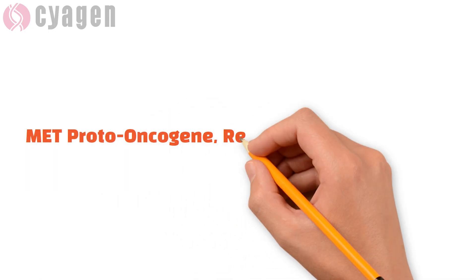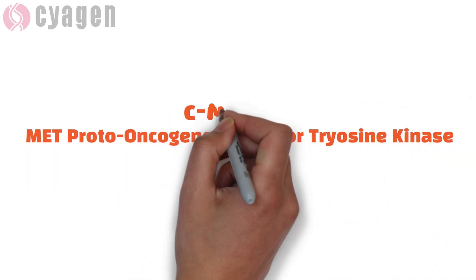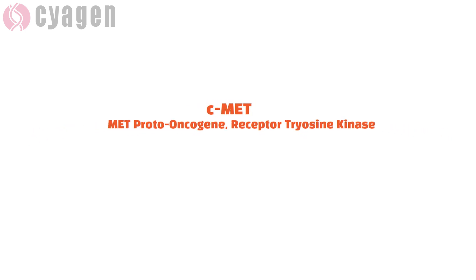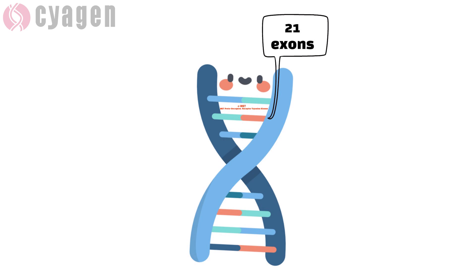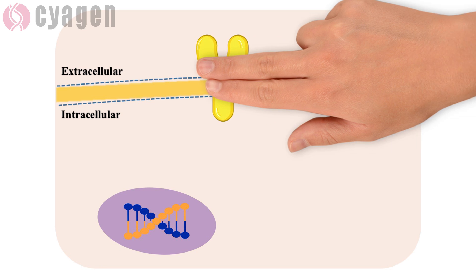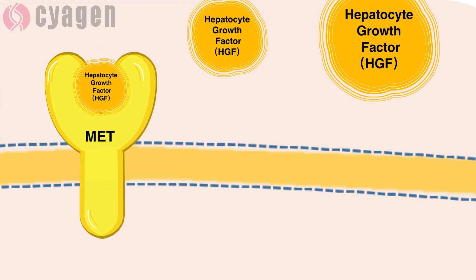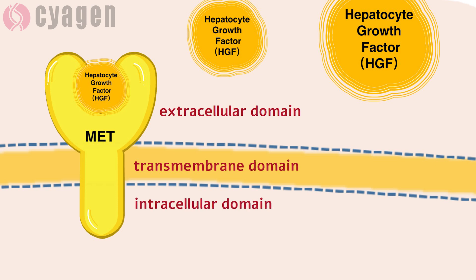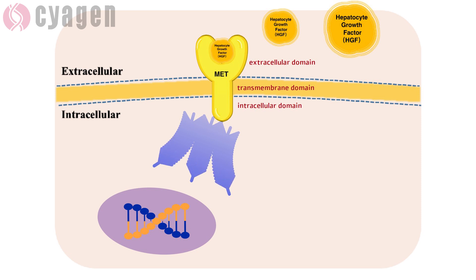MET proto-oncogene receptor tyrosine kinase, also known as c-MET, is a proto-oncogene located in the long arm of human chromosome 7 and contains 21 exons. MET is a tyrosine kinase receptor of hepatocyte growth factor, which mainly includes three domains: the extracellular domain, the transmembrane domain, and the intracellular domain.